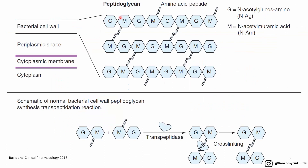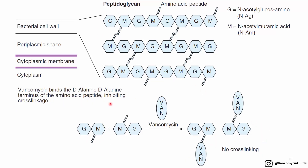The peptidoglycan is a mesh of building blocks — N-acetylglucosamine and N-acetylmuramic acid (G and M). These building blocks cross-link with each other to create this mesh. What vancomycin does is bind to these building blocks and inhibit cross-linking. So because vancomycin inhibits cross-linking, there will be no peptidoglycan layer formed.